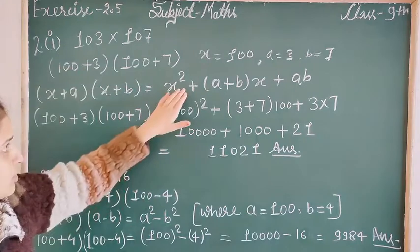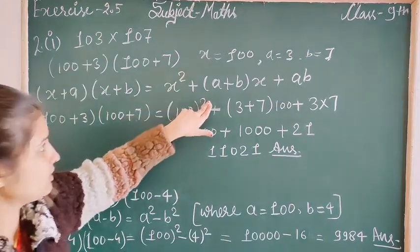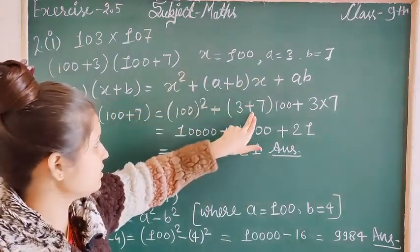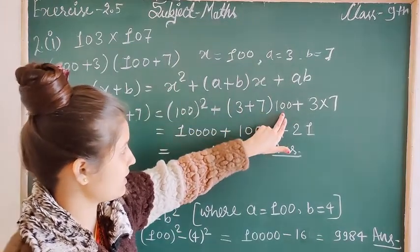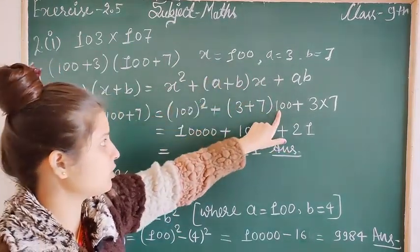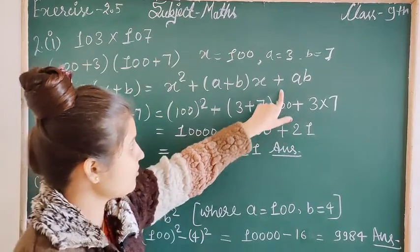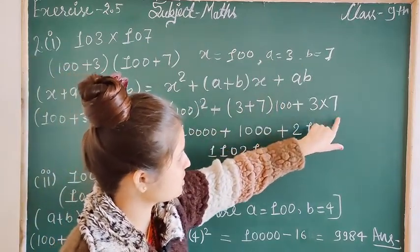Now we substitute into the formula: x² means 100², (a+b)x means (3+7)×100, plus ab which means 3×7.